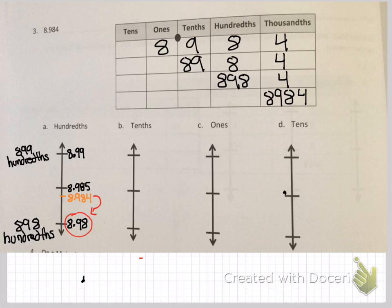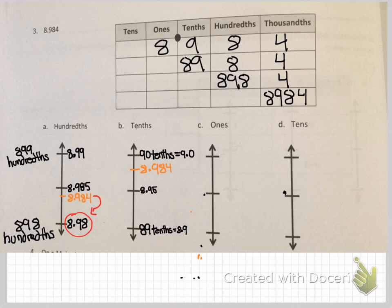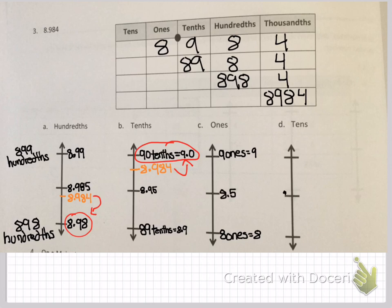Let's move on to tenths. You have 89 tenths, which equals 8.9. At the top you have 90 tenths, which equals 9.0. In the middle you have 8 and 95 hundredths. Placing 8 and 984 thousandths on the number line — it's pretty close to 90 tenths, so you'll be rounding up to 90 tenths, or 9.0. Moving on to ones: 8 ones at the bottom, 9 ones at the top, midpoint is 8 and 5 tenths. Your number fits toward the top, right below 9 ones, so you're rounding up to 9.